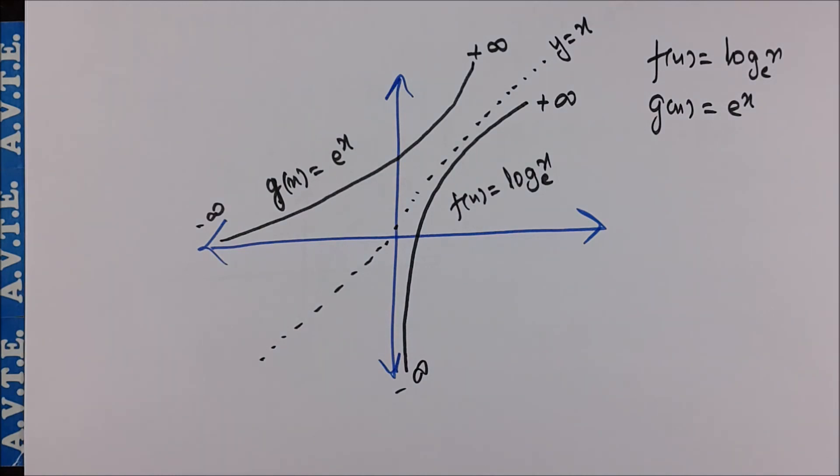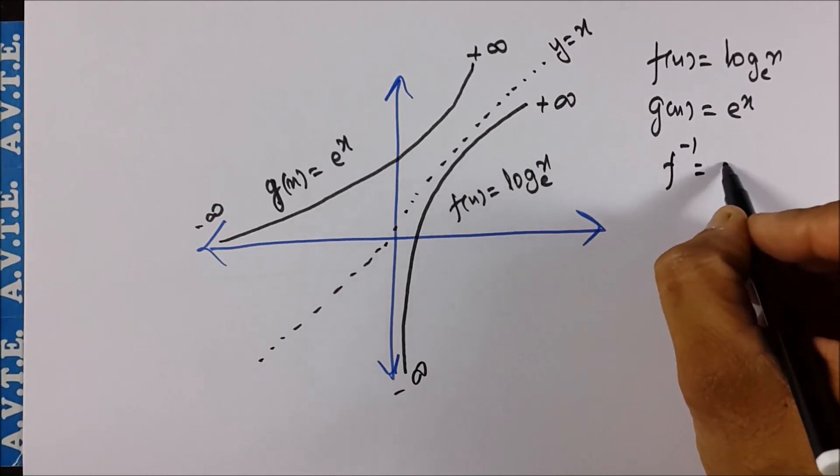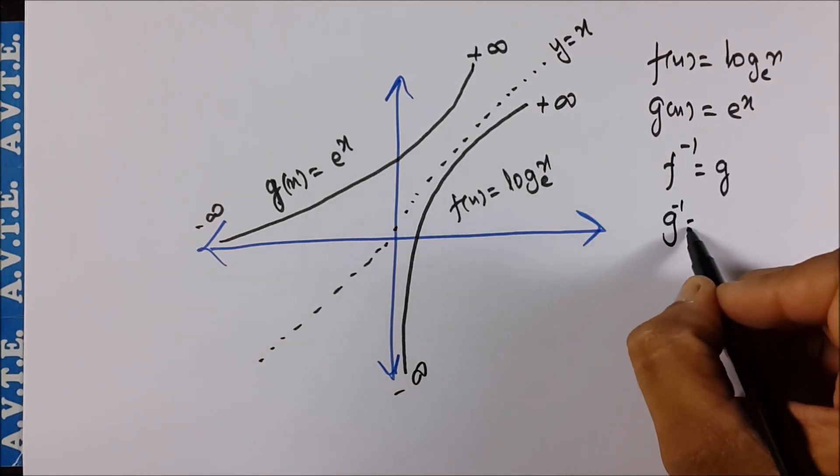So whenever you remove log it turns to exponential and whenever you need to remove exponential it turns to log function. So they are strongly the inverse of each other. So f inverse is g and g inverse is f.